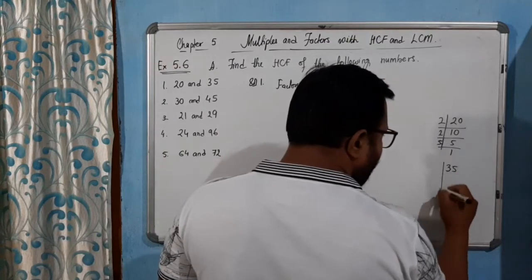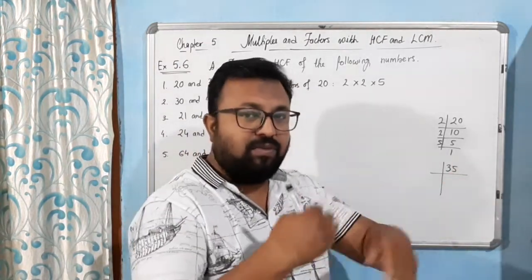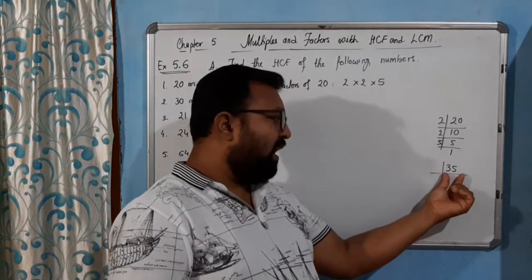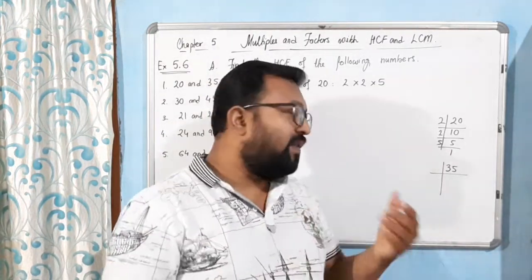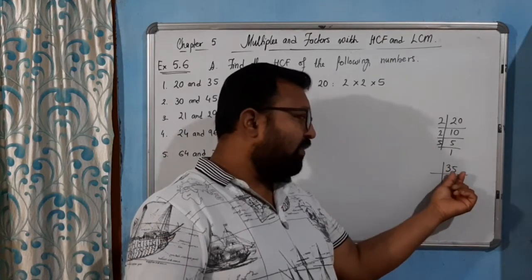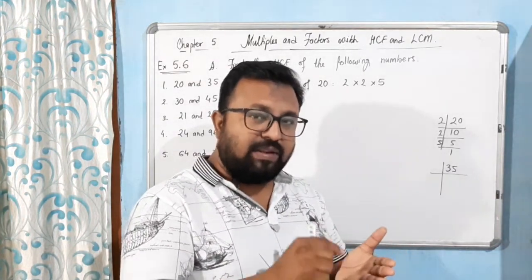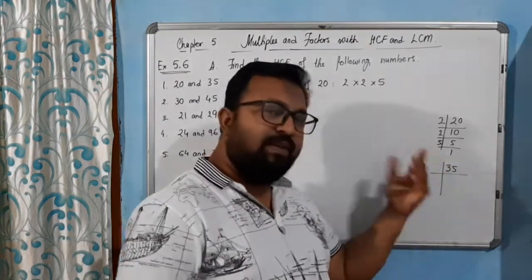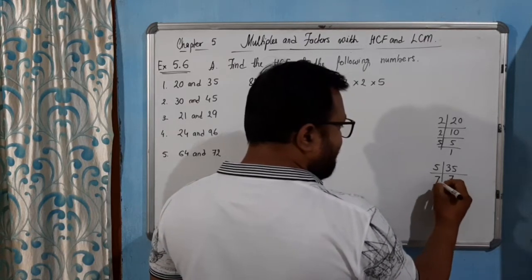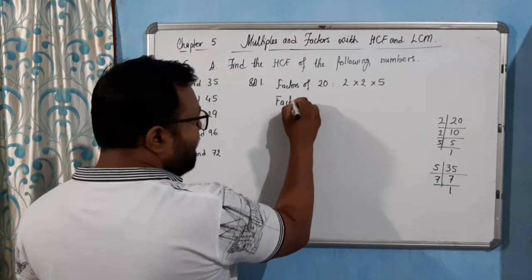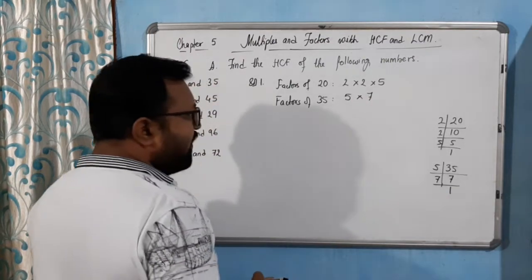Now for 35. Whenever you get an odd number in the units place it is not divisible by 2, so you move to the next prime number. For 3, you add the digits: 3 + 5 = 8, which is not a multiple of 3. Move to the next prime number 5. If the units digit is 5 or 0, the number is divisible by 5. Here we get 5, so 35 is divisible by 5: 35 = 5 × 7.